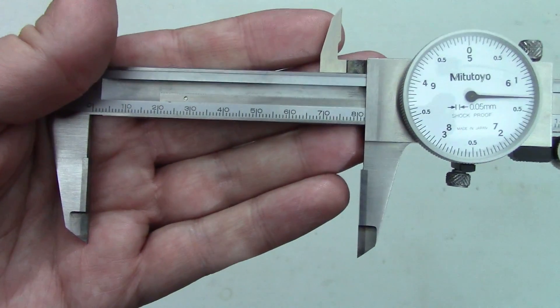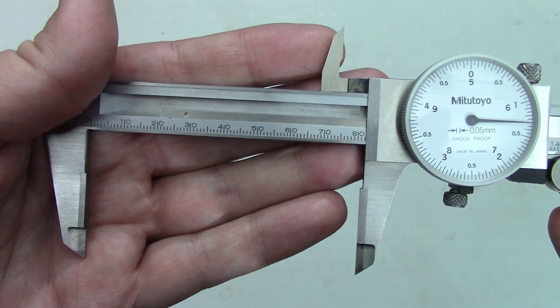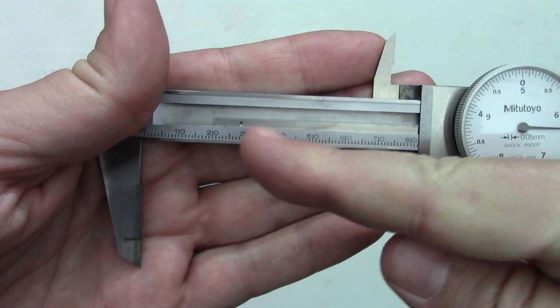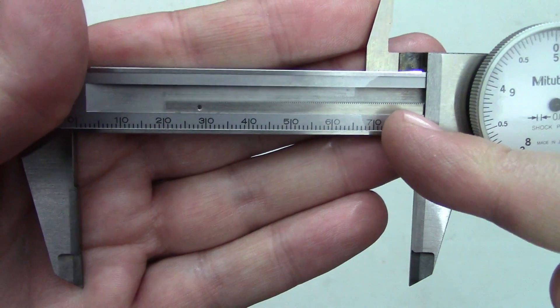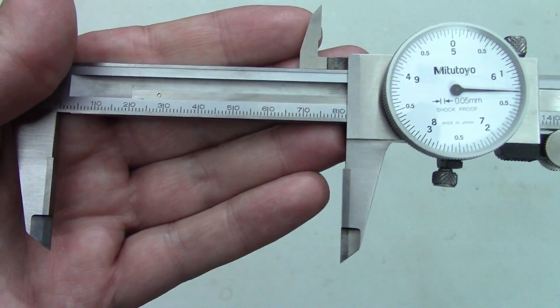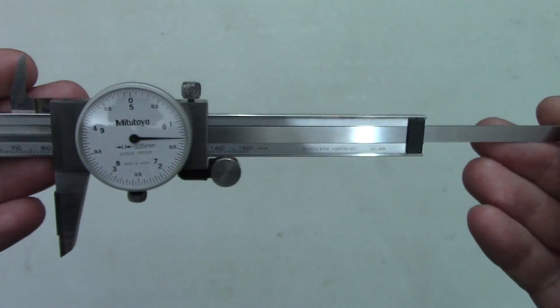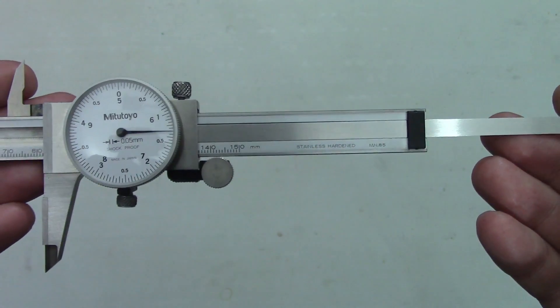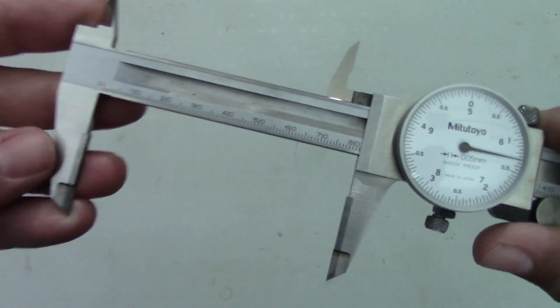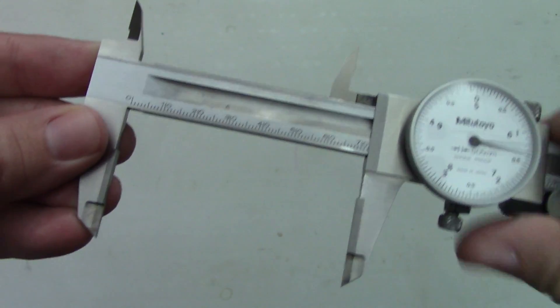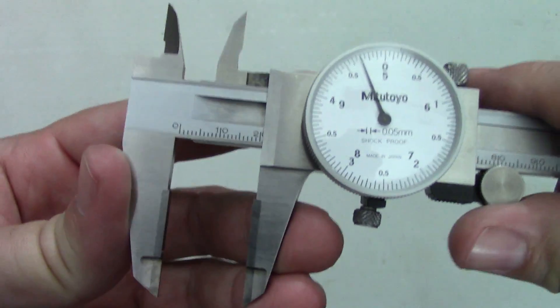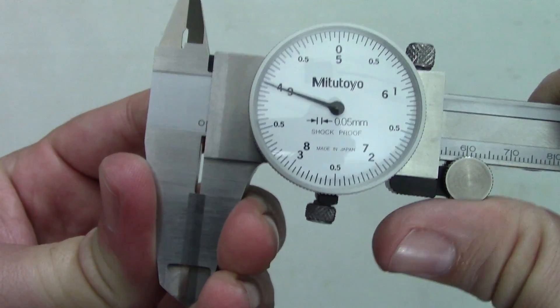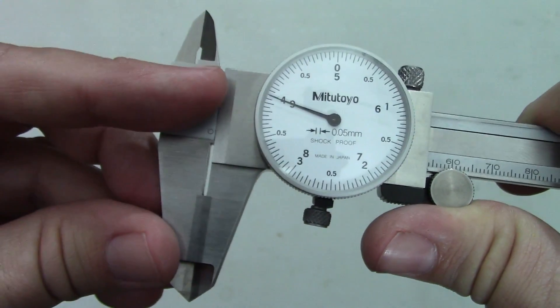You can also run into problems if dirt and grit find their way into the works. This is particularly troublesome with the rack and pinion that sets all the clockwork in motion. The rack is exposed when the calipers are open and only minimally shielded by the depth rod when they're closed, so it's actually pretty easy to get a chip or some grinding grit in there. Beyond making the tool feel like it's full of sand, it can cause the pinion to skip a tooth on the rack, which will make the needle land in the wrong spot on the dial.